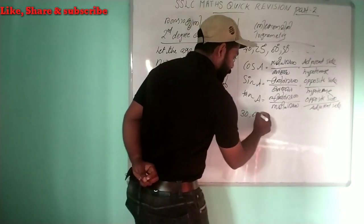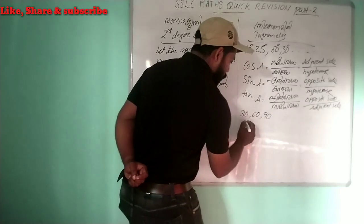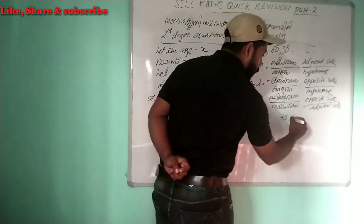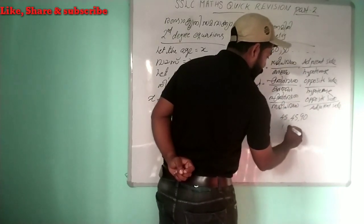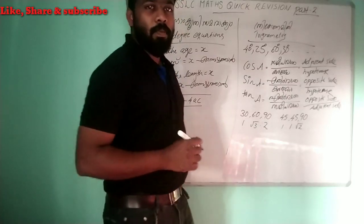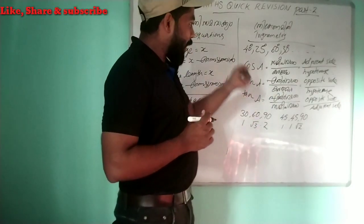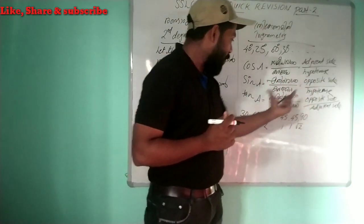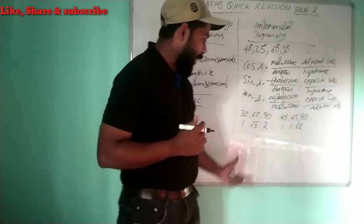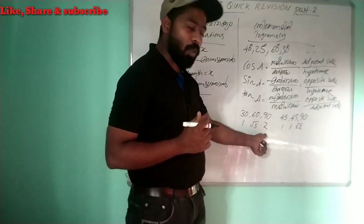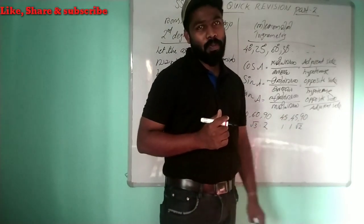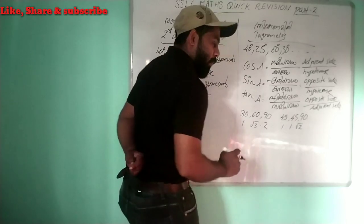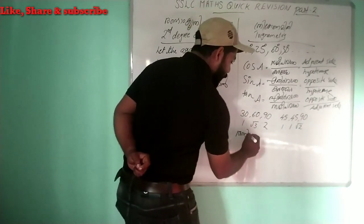The standard angle ratios: for 30-60-90, the ratio is 1 to root 3 to 2. For 45-45-90, the ratio is 1 to 1 to root 2. These ratios are important reference values: 1 is to 1 is to root 2, and 1 is to root 3 is to 2.